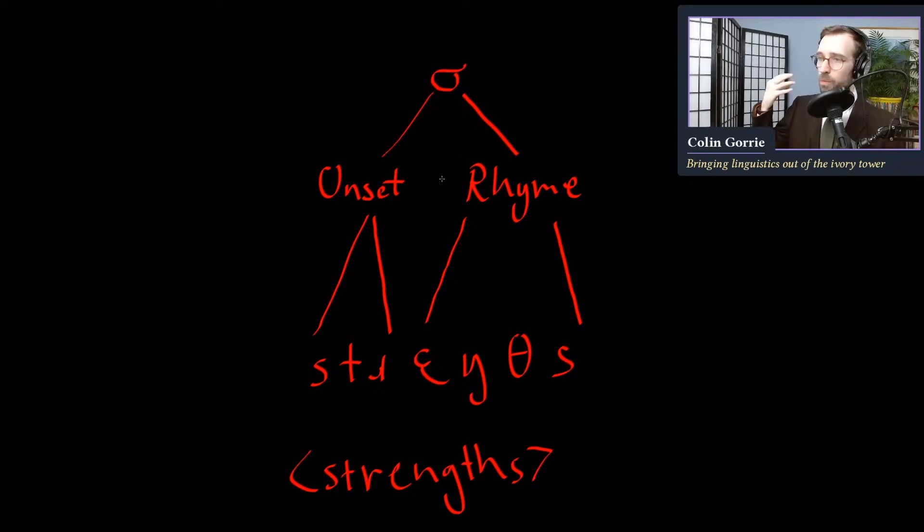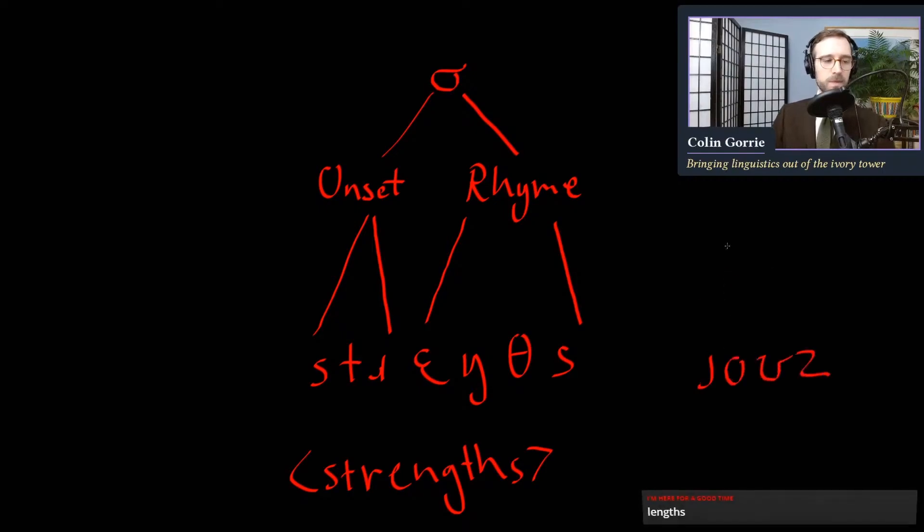So we have these two components. When we look at the rhyme, one of the reasons we call it a rhyme is that this is the portion of the syllable that we look to, to decide if two syllables rhyme. So not a lot of things rhyme with strengths, perhaps none. But if we have a word like a word like rose, we have - it's supposed to be, oh yeah, lengths. That's a good example.